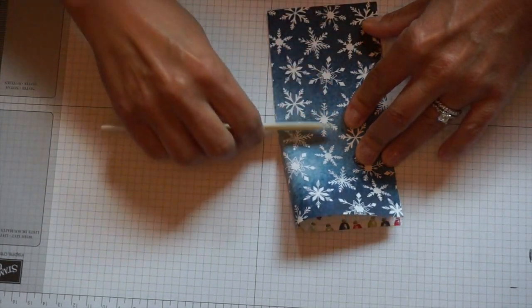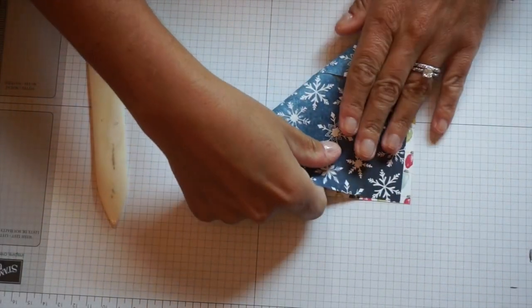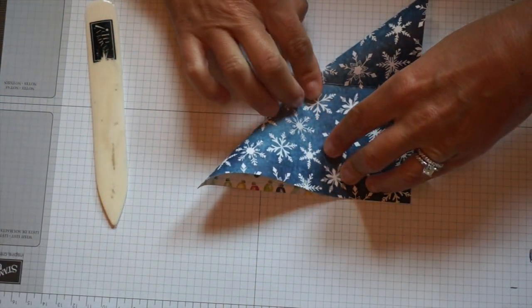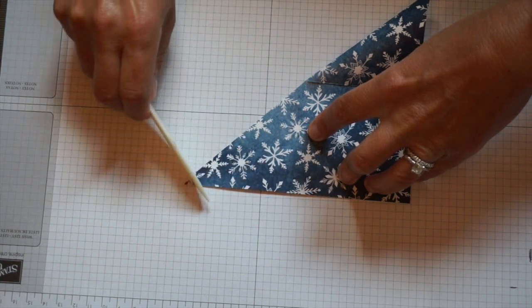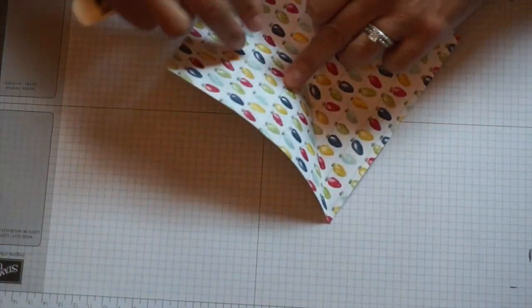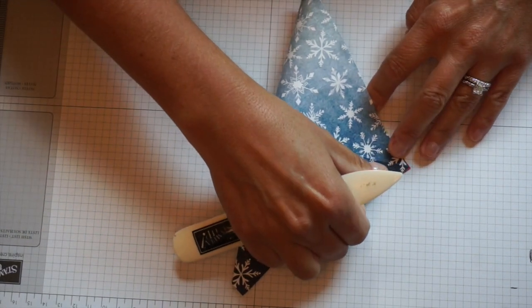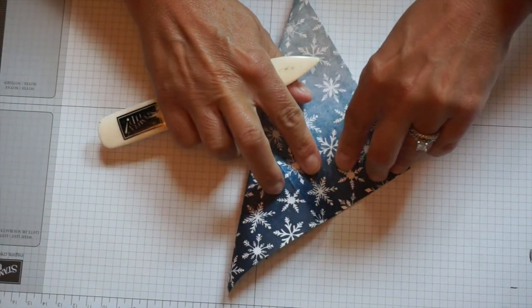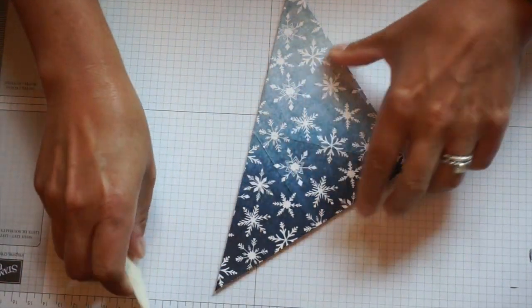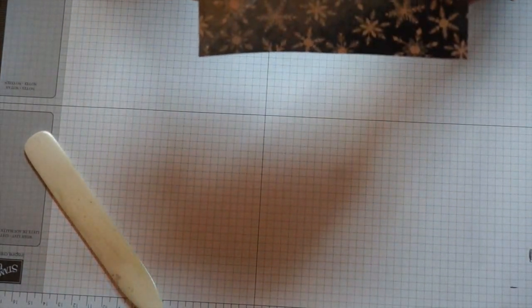Try to get it as even as possible. Then the next step is you want to fold in both corners on each side. It's okay if you don't get them exact, just get it as close to lined up as you can. Do this on the other side.